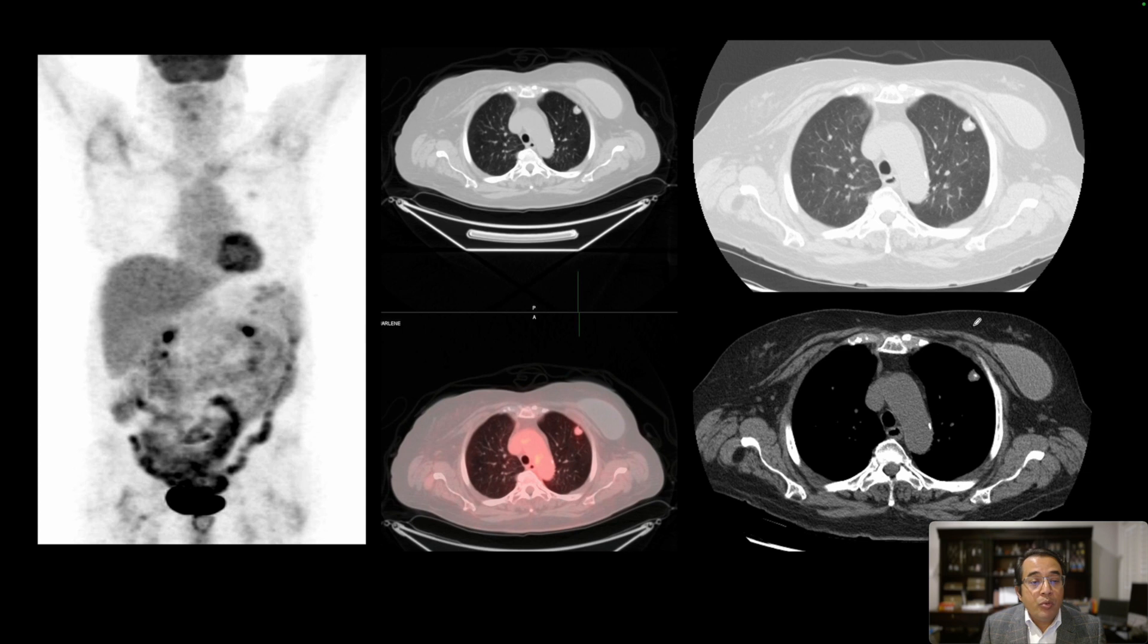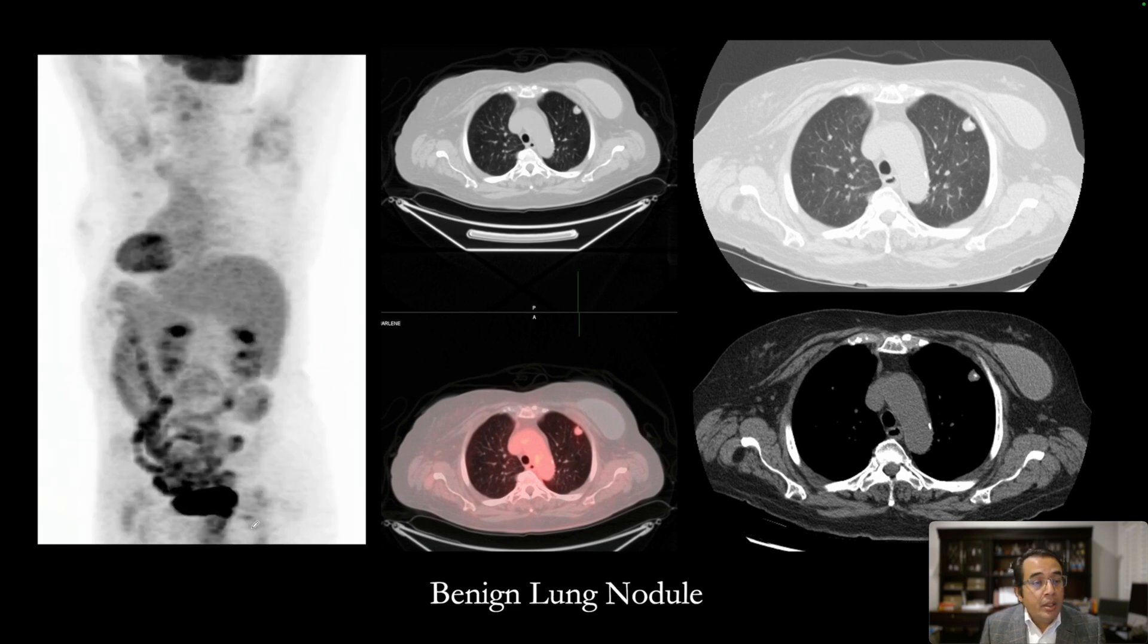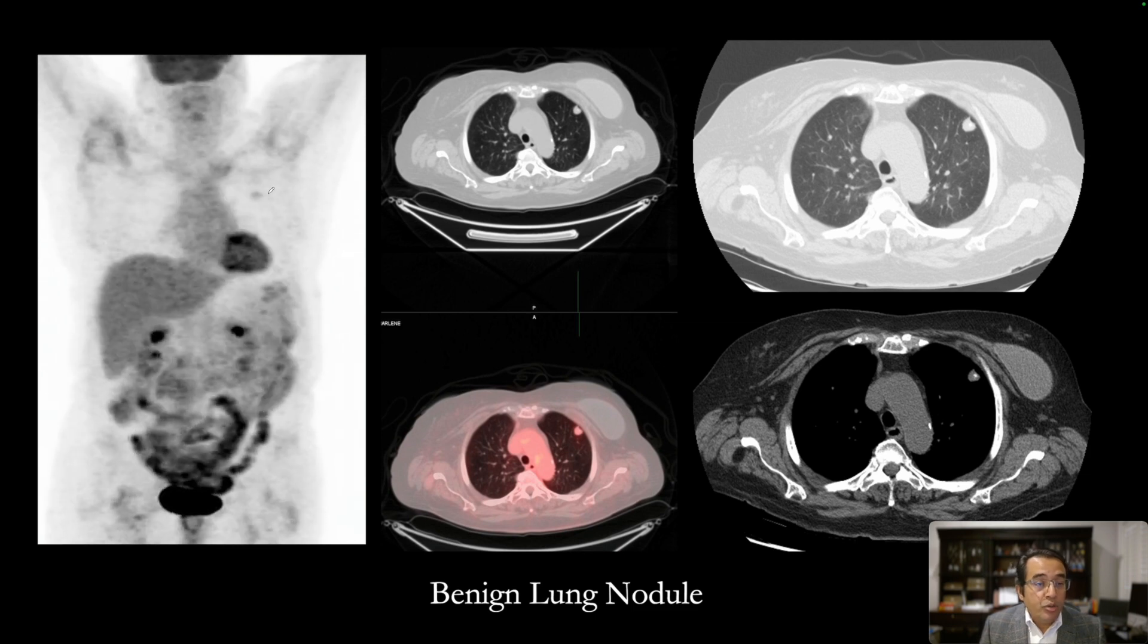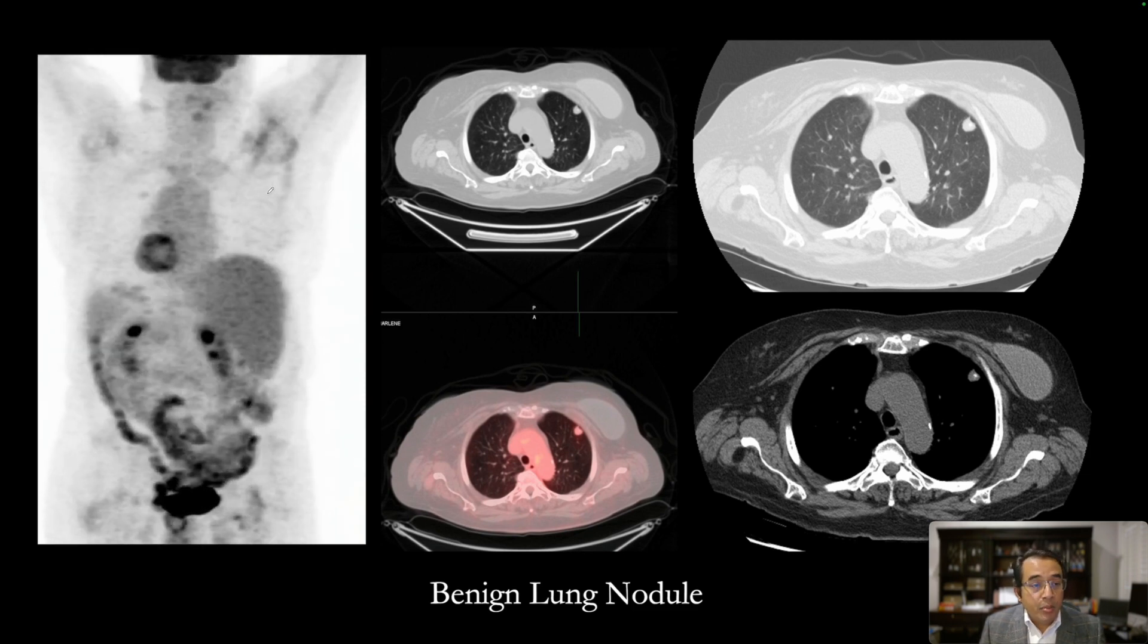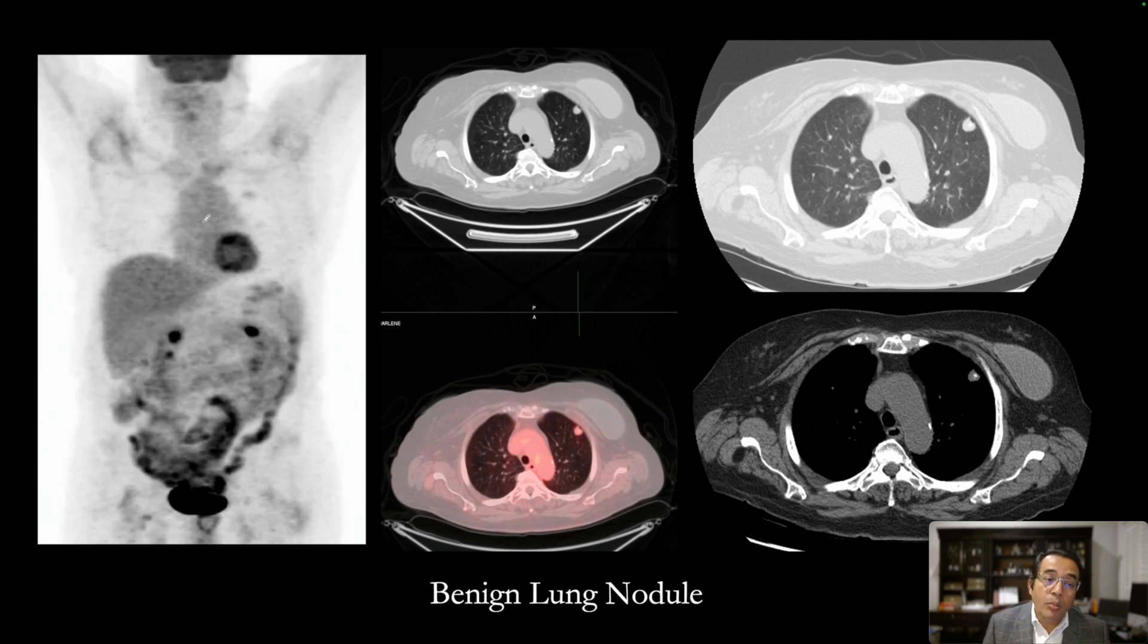Our next patient was being evaluated for a lung nodule. They underwent a FDG PET-CT study, and here is their rotating image. The rotating image shows mild uptake in the left upper lobe lung nodule. The intensity of the uptake is less than the mediastinal blood pool.